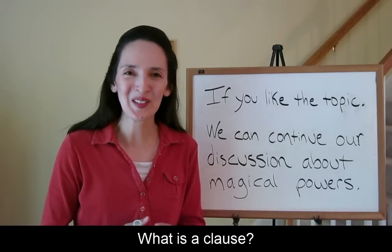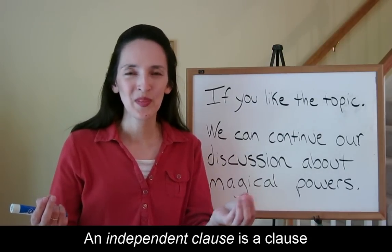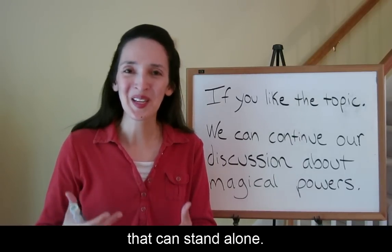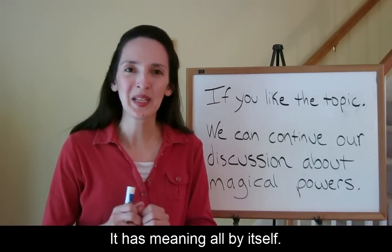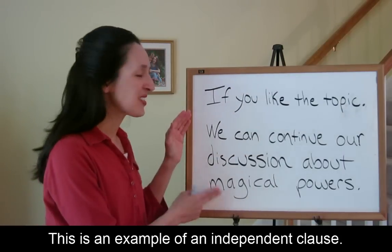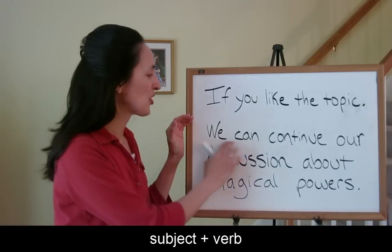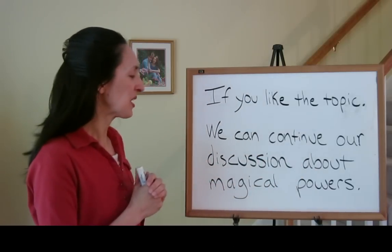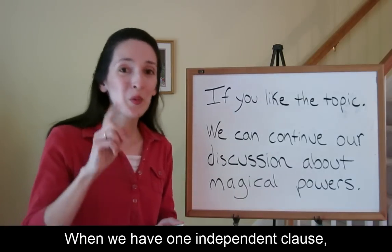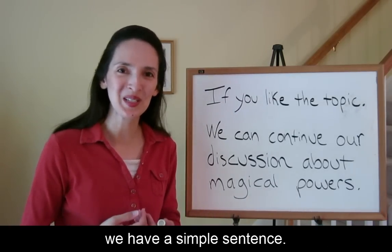What is a clause? A clause has a subject and a verb. An independent clause is a clause that can stand alone — it has meaning all by itself. Here is an example of an independent clause: subject, verb — "We can continue our discussion about magical powers." When we have one independent clause, we have a simple sentence.